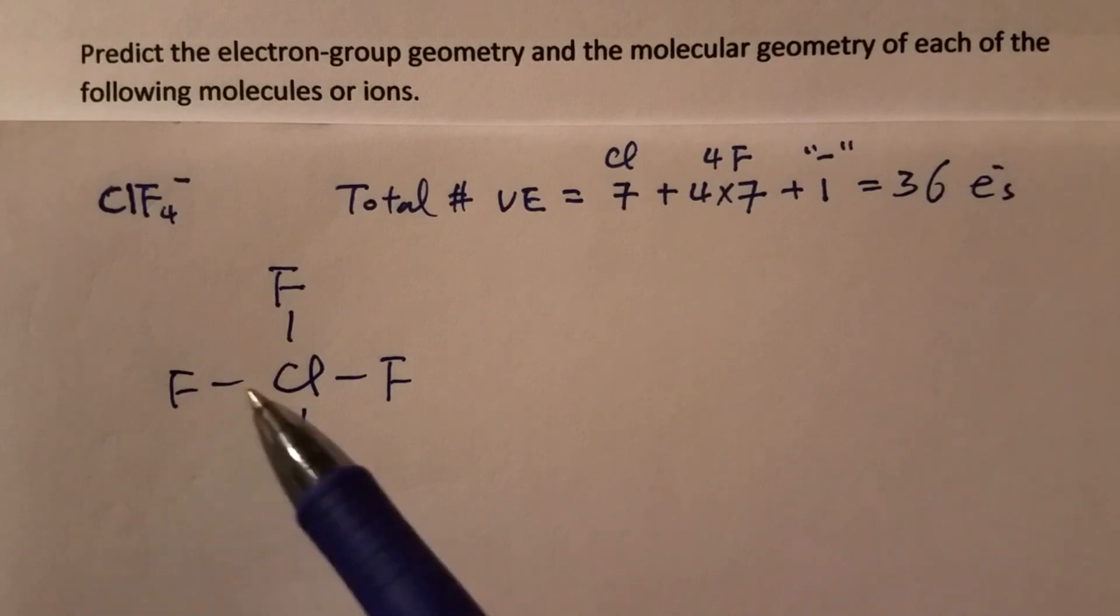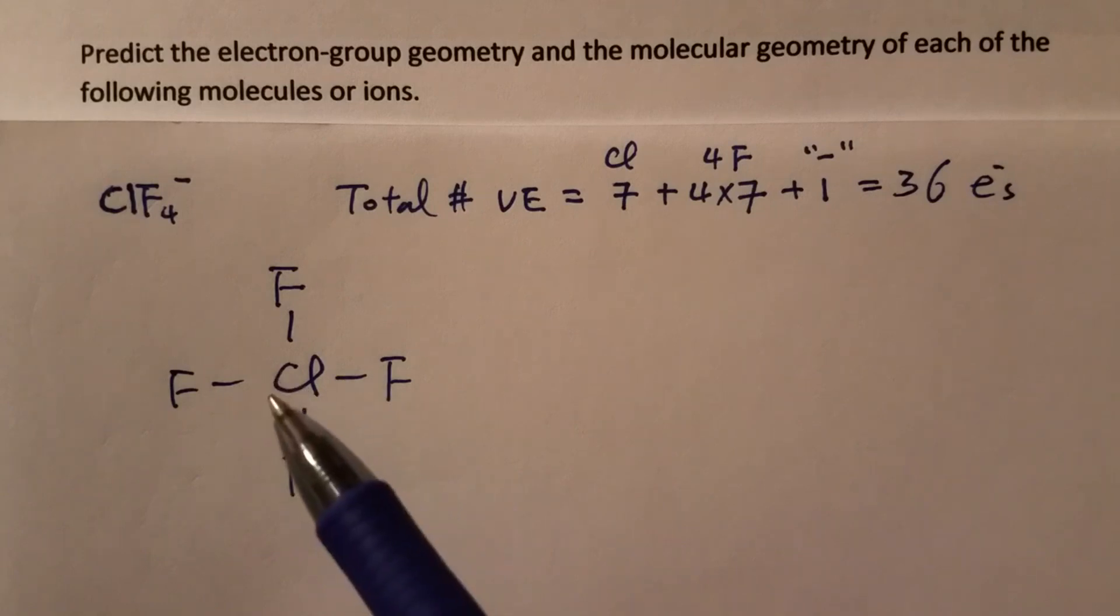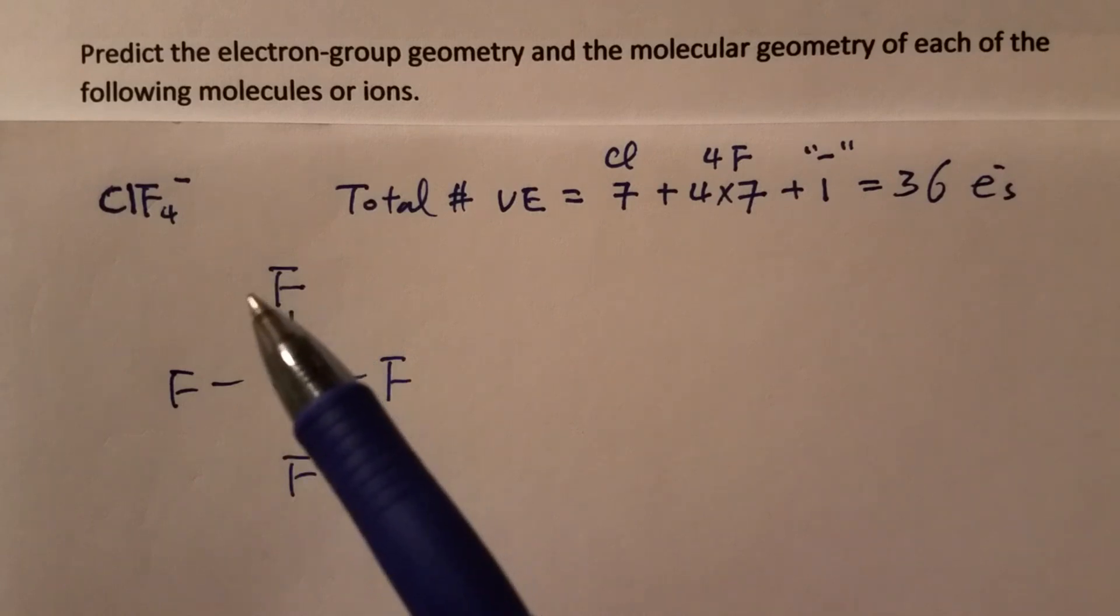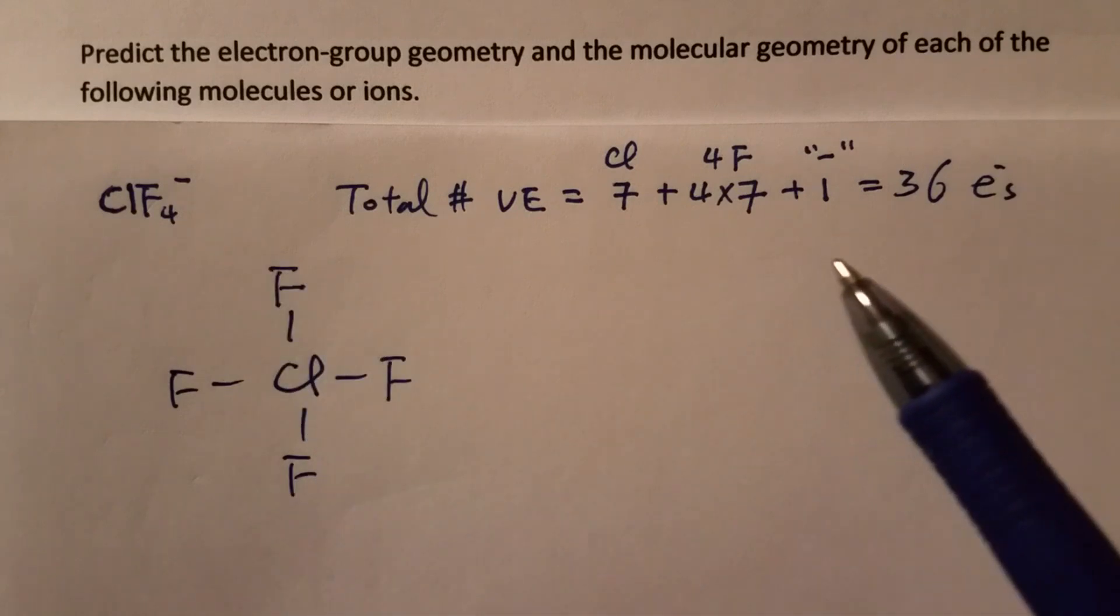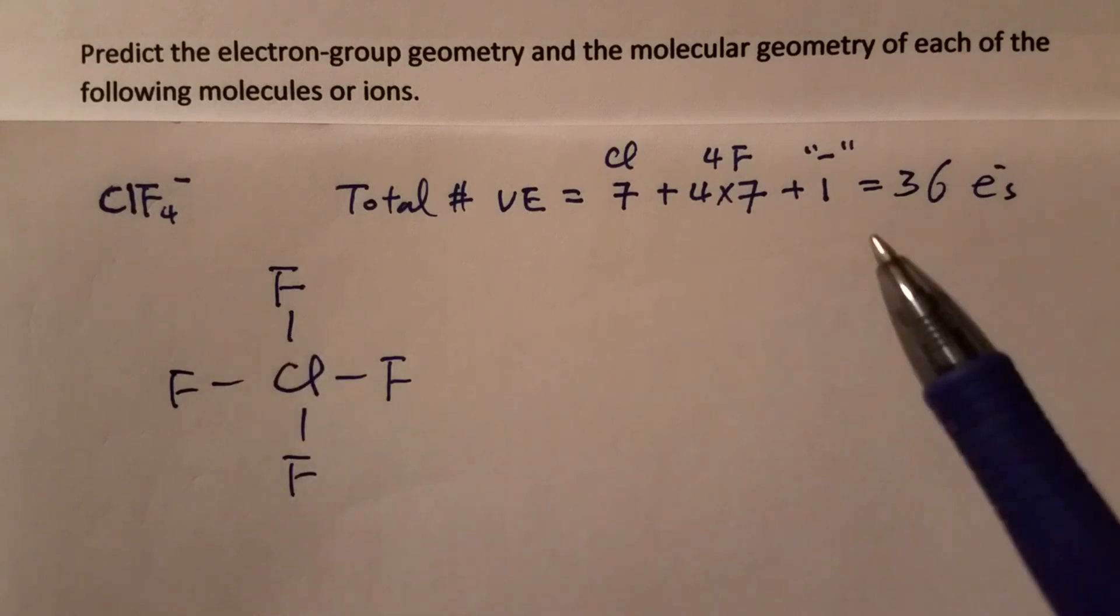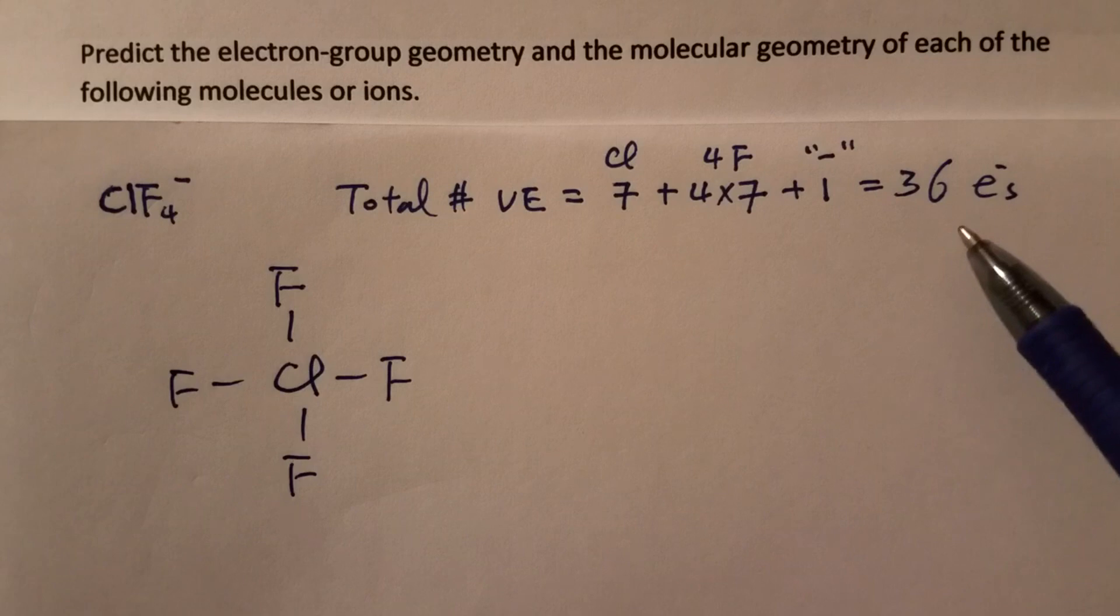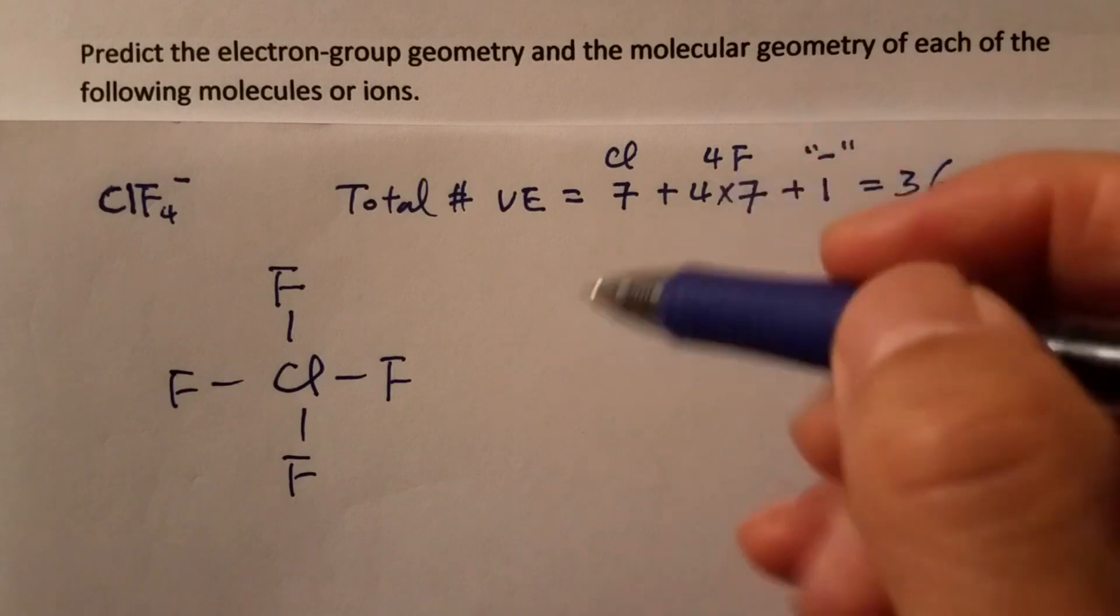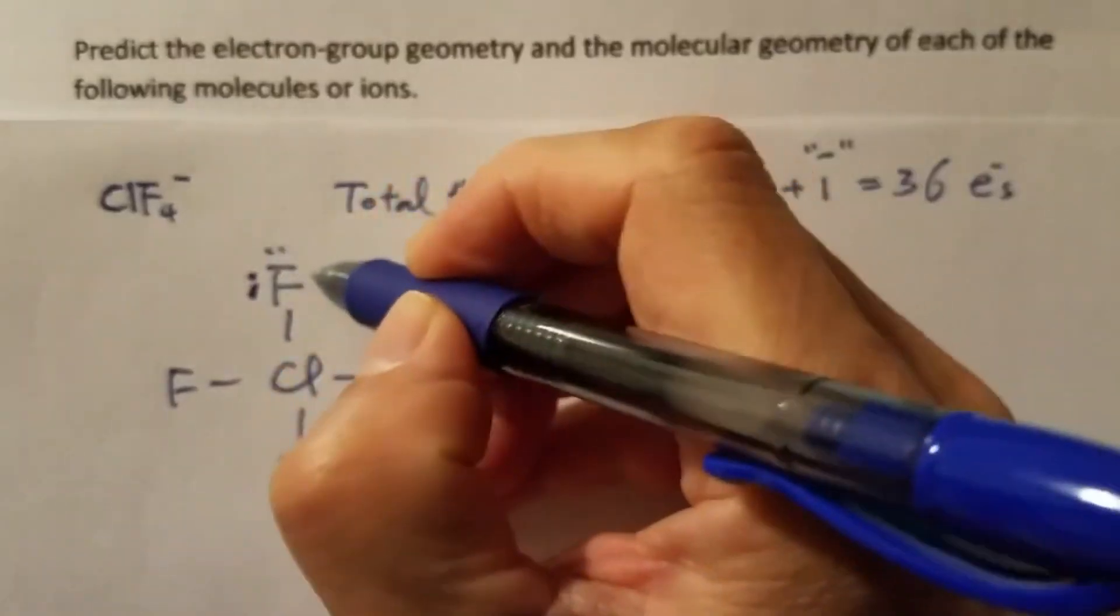Next we can draw the skeleton structure for this ion. Obviously we have just one chlorine that has to be the central atom, then four peripheral fluorine atoms. We already assigned eight bonding electrons among the 36 valence electrons, so now we have to assign the remaining 36 minus 8, that should be 28 remaining, first to the surrounding atoms.